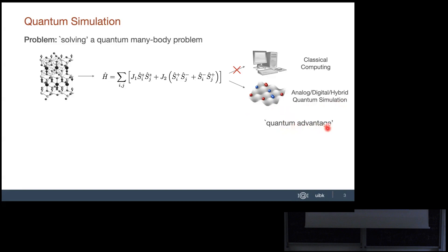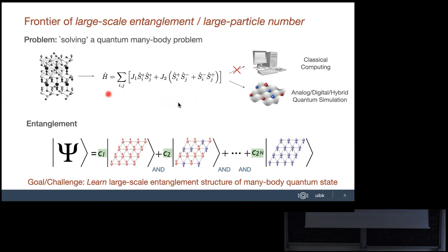The hope is that by doing this we have some quantum advantage — we are able to solve problems beyond what classical devices can do. The main reason this may be true is related to entanglement: the many-body wave function is a superposition of a very large number of configurations that a classical computer might not be able to store, even with matrix product states truncated at some bond dimension.